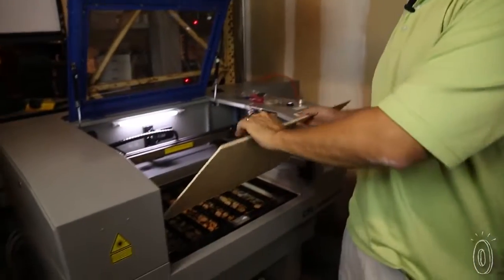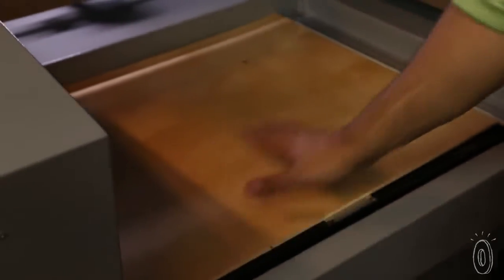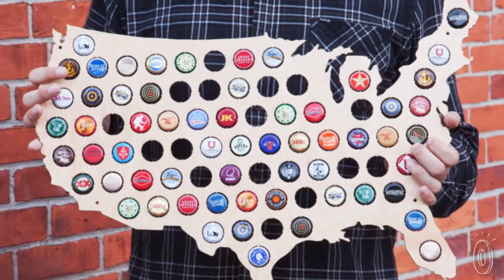The Tampa-based team selects the birch to make sure it's a nice uniform color without knots or other imperfections. And they put a UV resistant coating on the wood to keep it looking great.